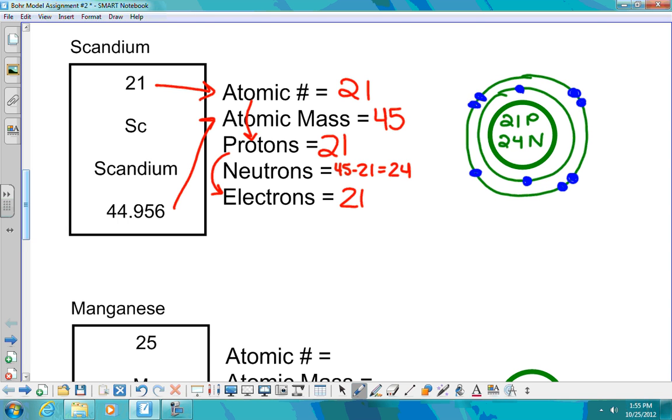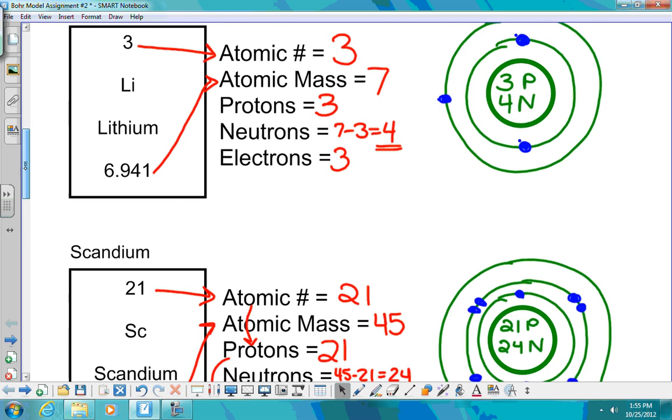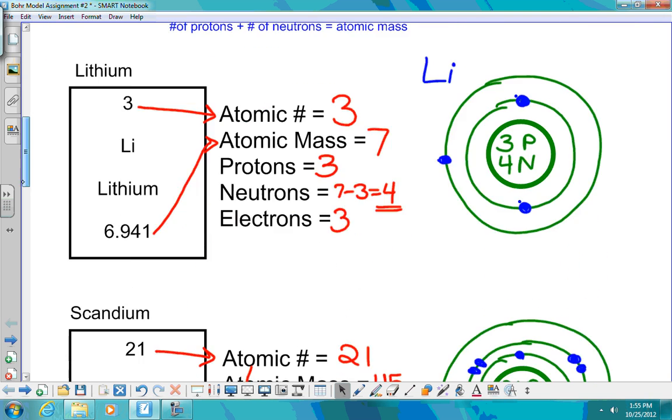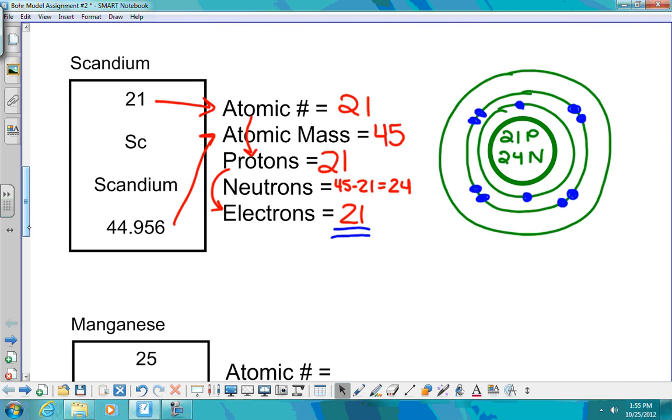So now I have a total of 10, and I need 21. So I have to make a third shell. The third shell, according to the rules, you look back up at your rules, you can have up to 18 on the third shell. Now, will I need all 18? No. I have 10, I need 21, so I need 11 more.